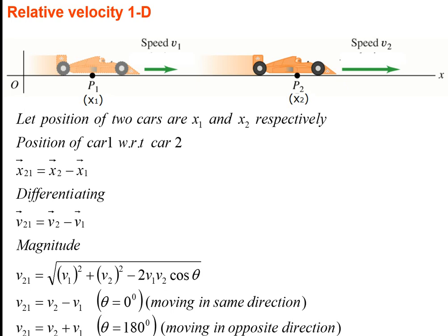Relative velocity in one dimension: if two cars have positions x₁ and x₂ at time t, the position of car 1 with respect to car 2 is x₂ − x₁. Taking the derivative gives relative velocity v₂ − v₁. Relative velocity is a vector difference; its magnitude is √(v₁² + v₂² − 2v₁v₂cosθ). If moving in the same direction they add up; if in opposite directions they subtract.